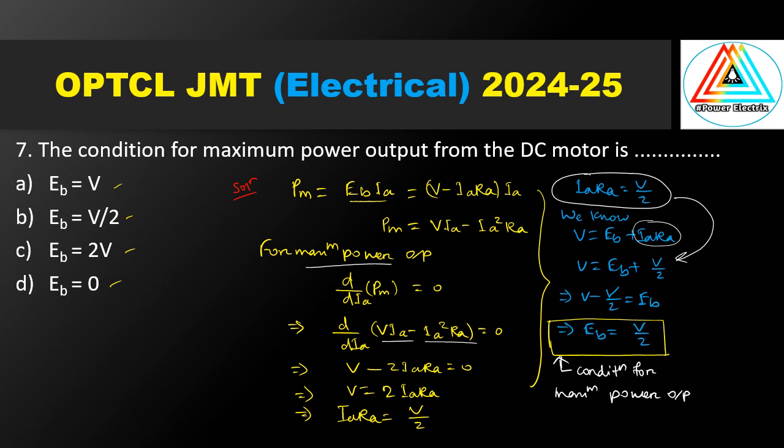So when the back EMF value is V by 2, we get maximum power output. This is the condition for maximum power output in a DC motor — Eb equals V by 2. The correct answer is option B, Eb equal to V by 2.